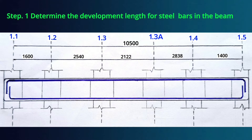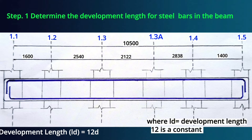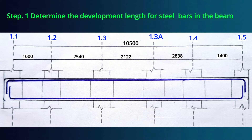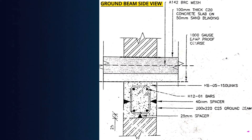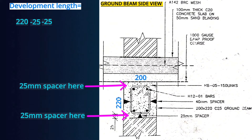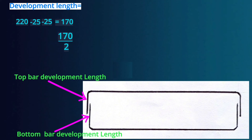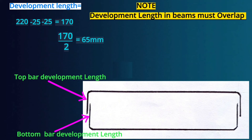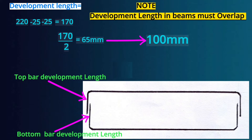The first step is to determine the development length. For academic purposes, use the formula LD = 12D, where LD is the development length, 12 is a constant, and D is the diameter of the steel bar. But since we have our drawings here, let's follow the drawing. The side view shows this beam is 220 millimeters depth and 200 millimeters width. We get the depth of 220mm, deduct 25mm concrete cover at the bottom and 25mm on top to remain with 170mm. Divide 170mm by two to get 65mm. But since development length in beams has overlap, we take 100 millimeters instead of 65 millimeters.